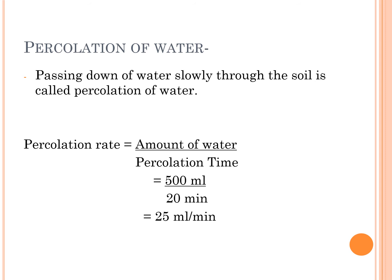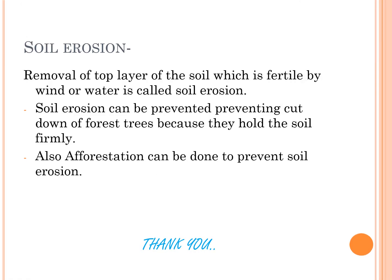For example, if we pour 500 ml of water into the soil and it takes 20 minutes to pass through, then the percolation rate will be 25 ml per minute — meaning 25 ml of water passes through the soil in one minute.